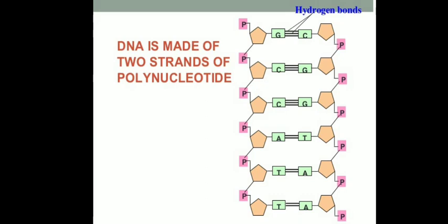In the Watson and Crick DNA model, it has two long polynucleotide strands which are coiled around an imaginary central axis and form a double helical structure. The diameter of DNA is around 20 Ångströms, and the distance between two successive bases is nearly 3.4 Ångström units. These two strands of polynucleotide sequence join each other to form the double-stranded structure of DNA.